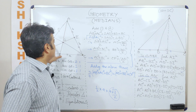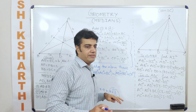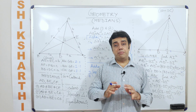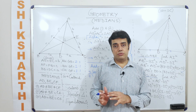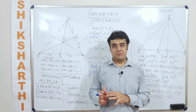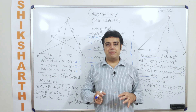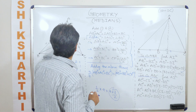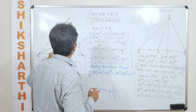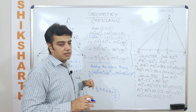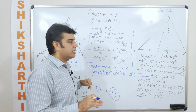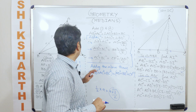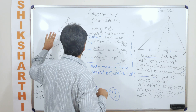If I make this an equilateral triangle, all the medians will remain medians but will also become perpendicular bisectors for the sides. AD no longer remains a median only — it becomes an altitude as well. Similarly, BE and CF also become altitudes.